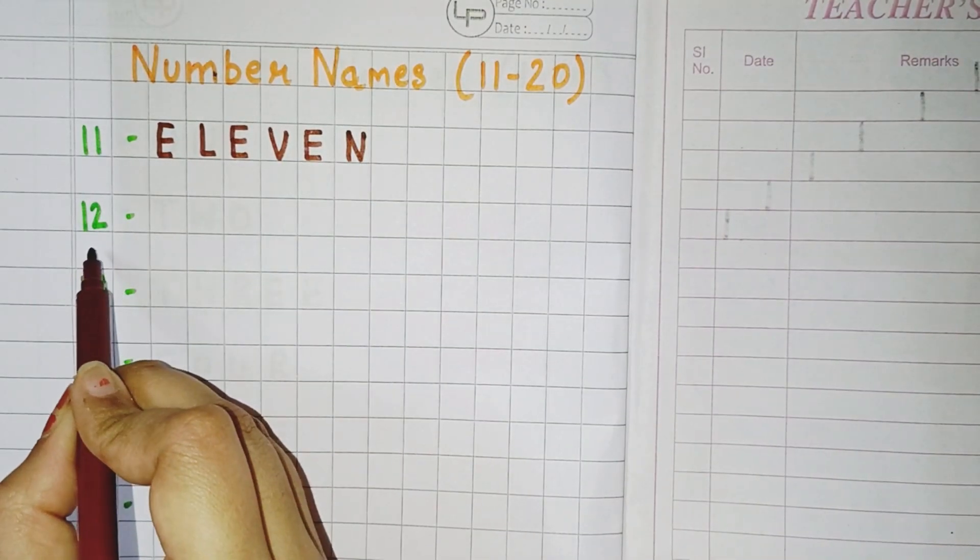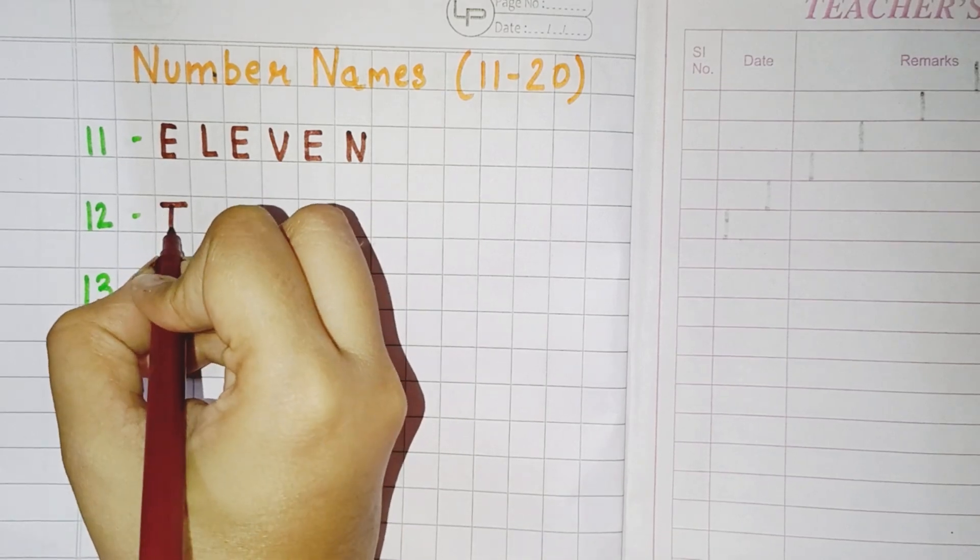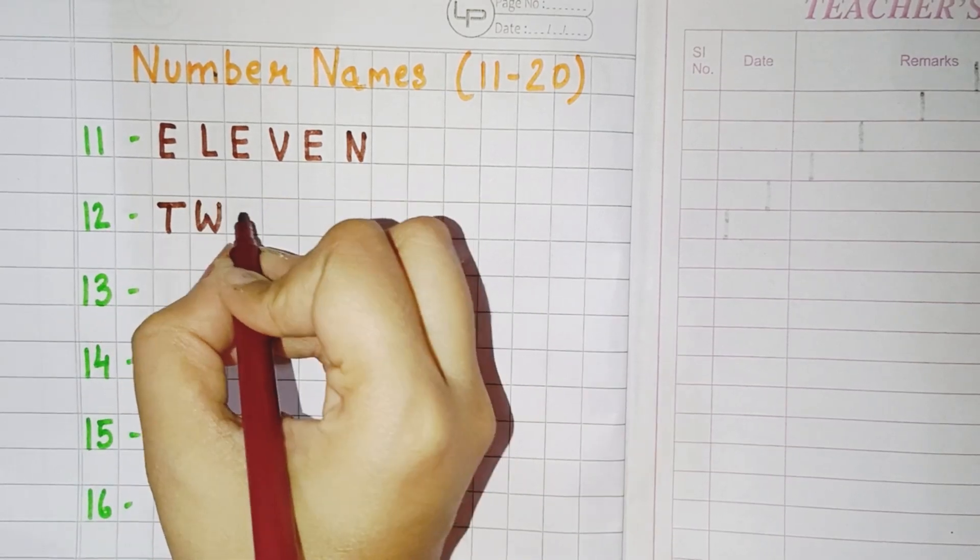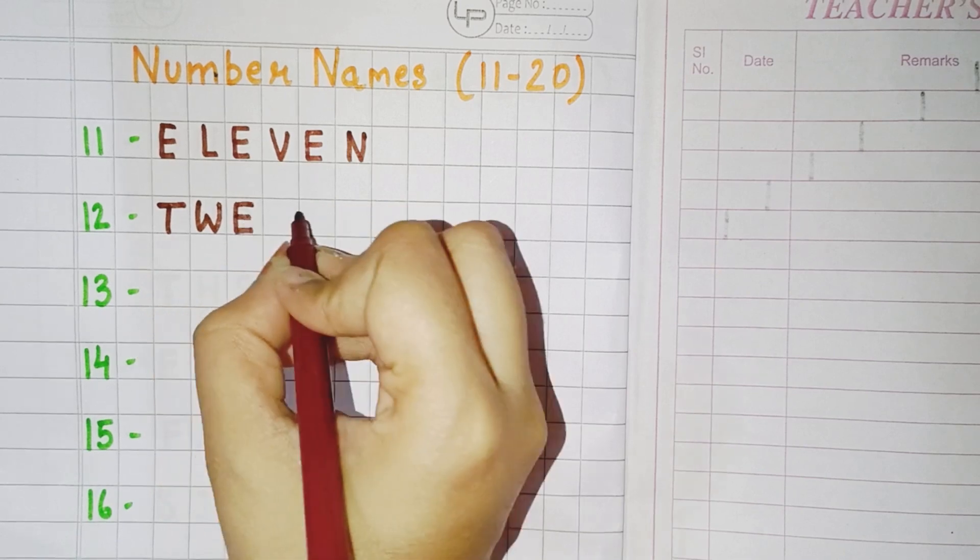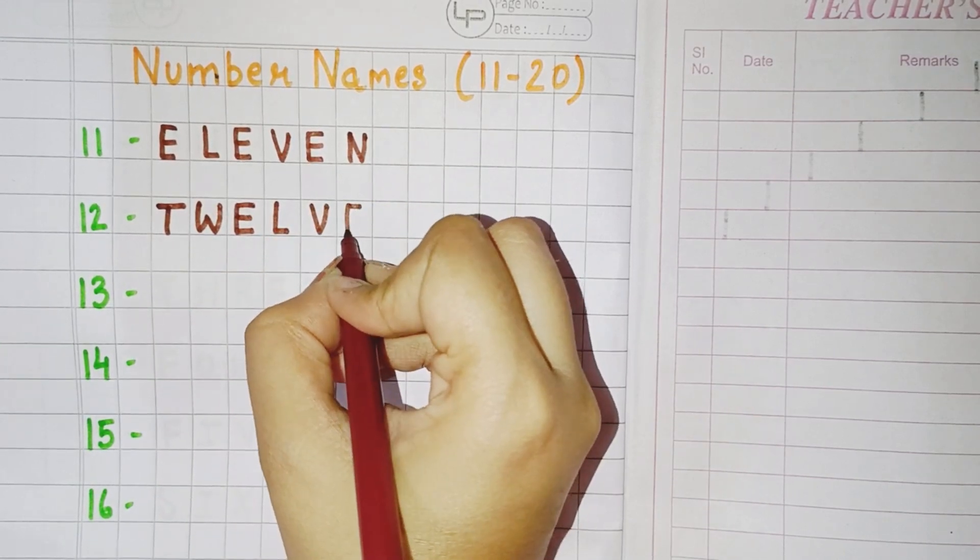Now the next is 12. So what is the spelling of 12? T, W, E, L, V, E. Twelve.